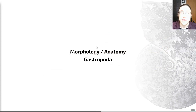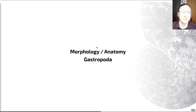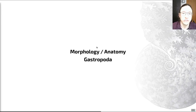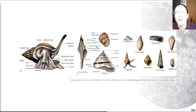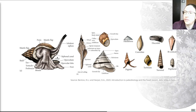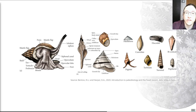Moving on to the gastropods — these are the most varied and abundant of the molluscan clades around today, and include the snails and slugs. There is a wide range of modes of life within this group over their long geological history, spanning from marine to terrestrial environments. They are known for their spiralled shell, usually made of aragonite, which is often conical with a pointed apex posteriorly. One whorl is marked here, and the shell is normally orientated with the aperture facing forwards and the apex facing upwards.